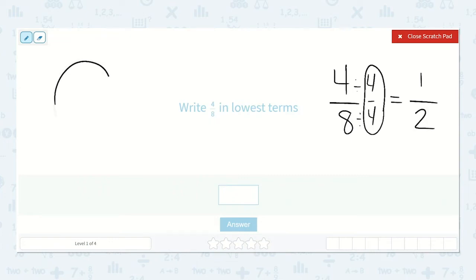I will show you why this works. Here, we have a circle split into eighths. If we were to shade in 1, 2, 3, 4, 4 eighths is the same as 1 half.